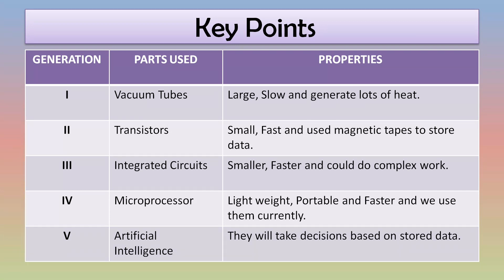Then came the third generation. In the third generation, transistors were combined to create ICs — integrated circuits. Third generation computers were pretty small, they were very fast and they could do complex work, and by this stage computers had started giving reliable outputs.